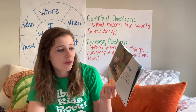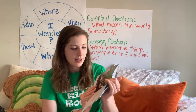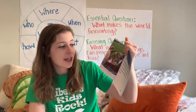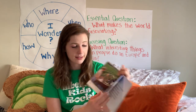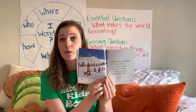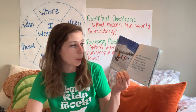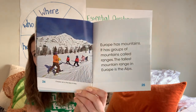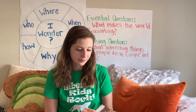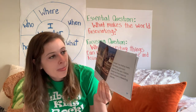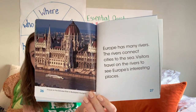Land and water: Europe has forests where trees grow and many animals live. This is a brown bear looking for food in Finland. Europe has places that are hot and dry — the weather is good for growing olives and grapes. These folks are in France. Europe has mountains, and groups of mountains are called ranges. The tallest mountain range in Europe is the Alps — you can see people skiing there. Europe also has many rivers that connect cities to the sea, and visitors travel on the rivers to see Europe's interesting places.